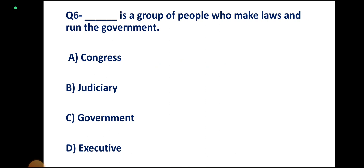Question number 6. Which is a group of people who make laws and run the government? Options: Congress, Judiciary, Government, Executive. Correct answer: Executive.